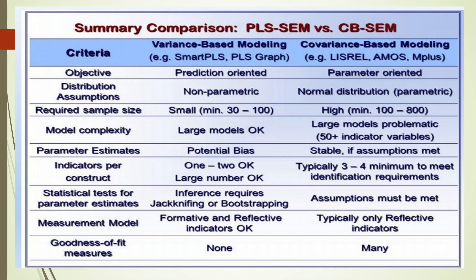If I talk about the distribution assumptions, Smart PLS is non-parametric, covariance-based is parametric. It means that the data should be normal. In case of covariance-based SEM, normal distribution is necessary, normality in the data is necessary.